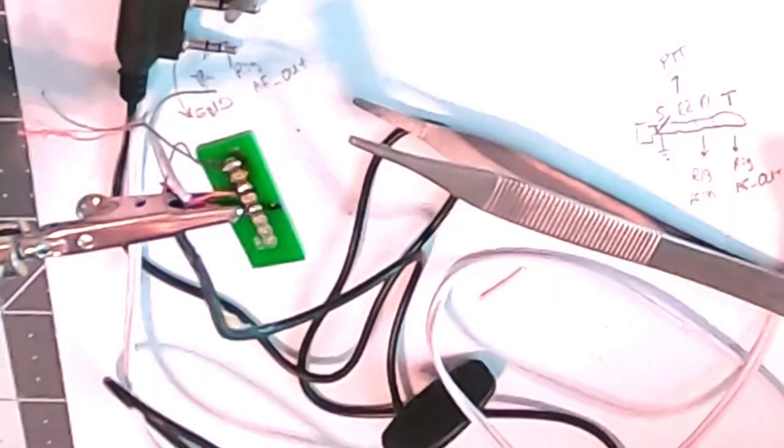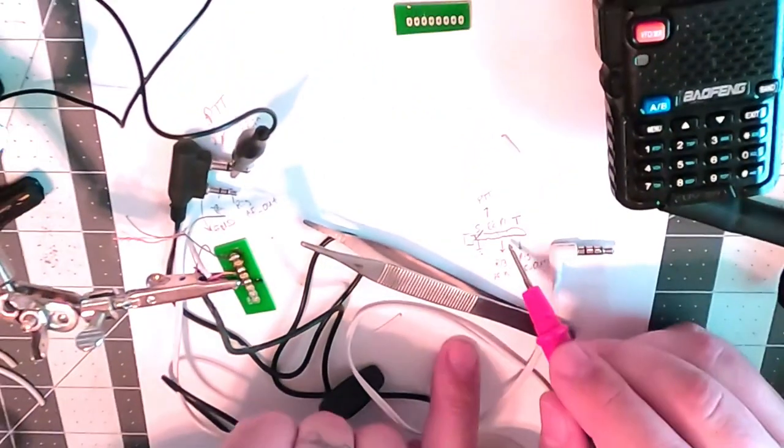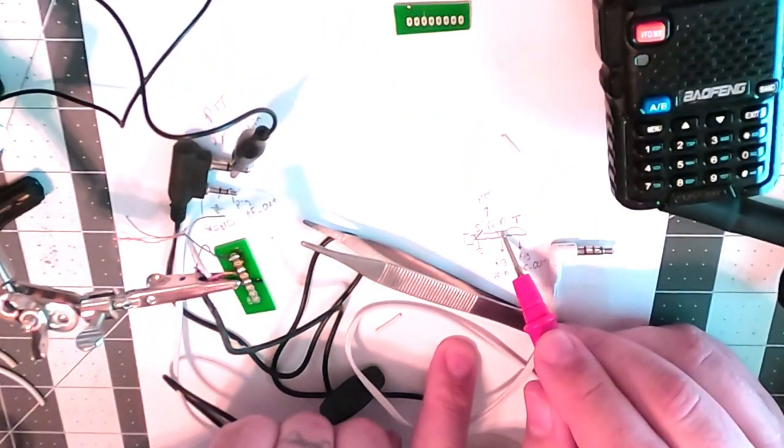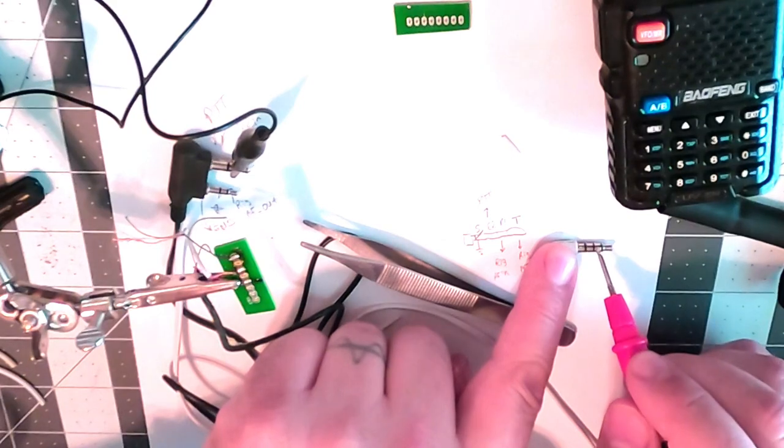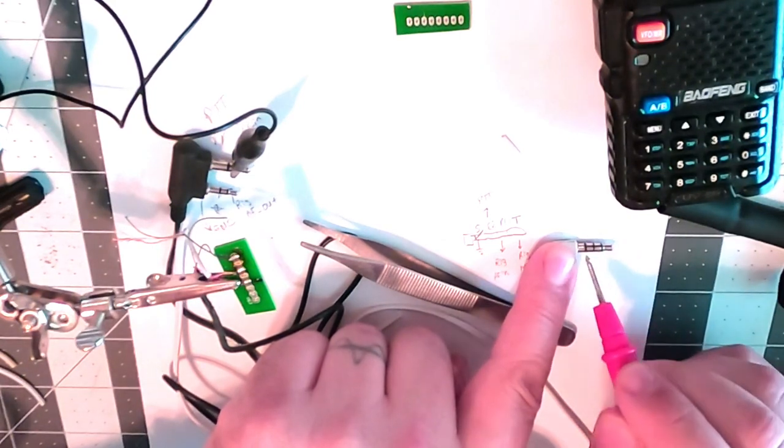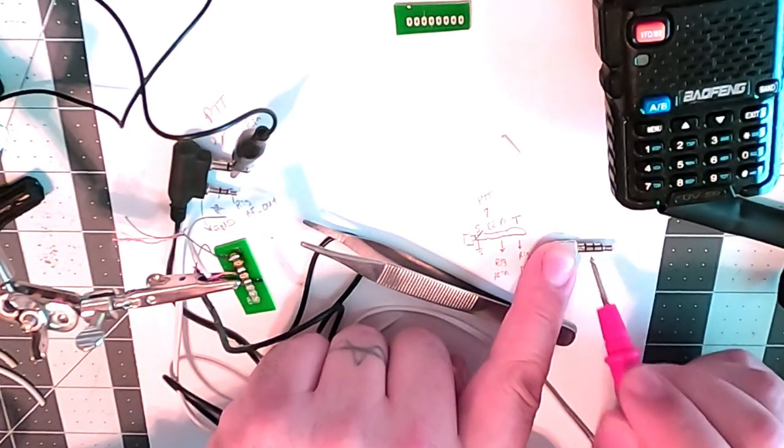Now let's check for continuity. We just connected rig AF in to rig AF in and we don't have any shorts. So that is excellent.